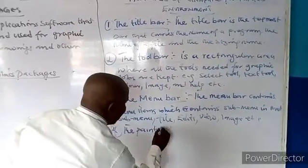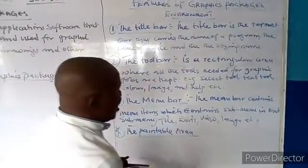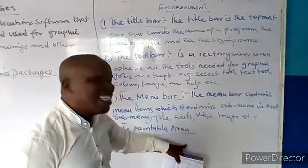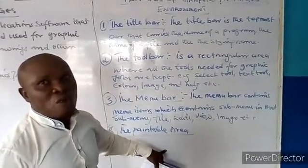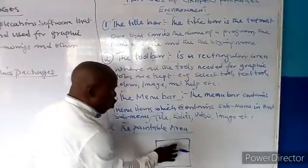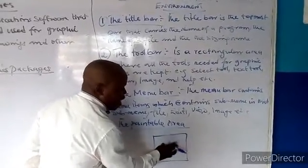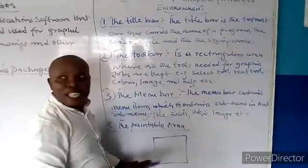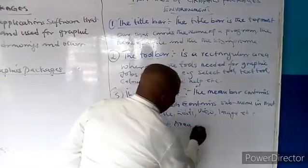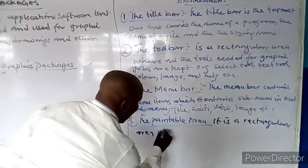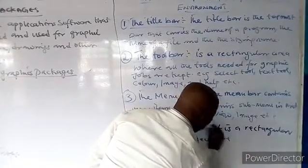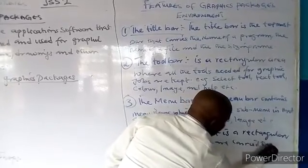Number four is the canvas or table area. The table area is a rectangular area in which a project is being worked on. If you do anything outside that rectangular area, you cannot print it — it will not come out from the printer because it is not done in the printable area. That is where you do the project.